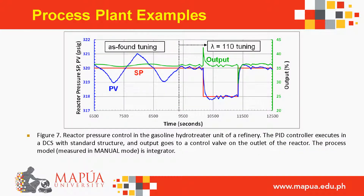Reactor pressure control in the gasoline hydrotreator unit of a refinery: the PID controller executes in a DCS with standard structure, and the output goes to a control valve on the outlet of the reactor. The process model is integrator.